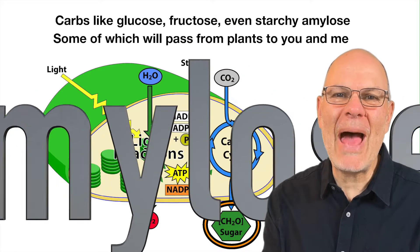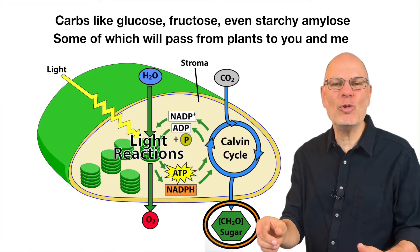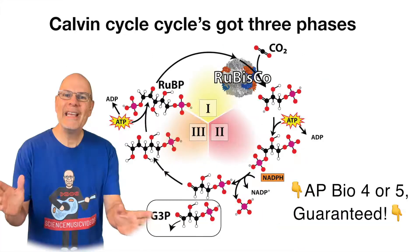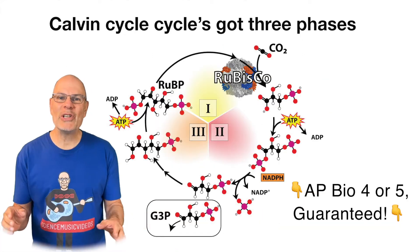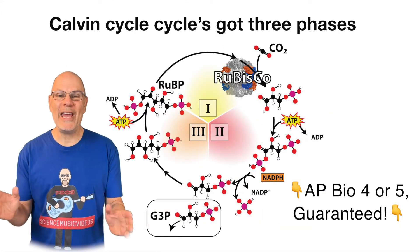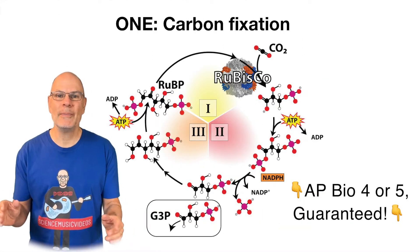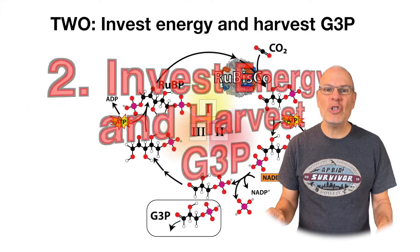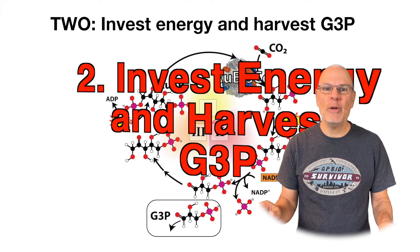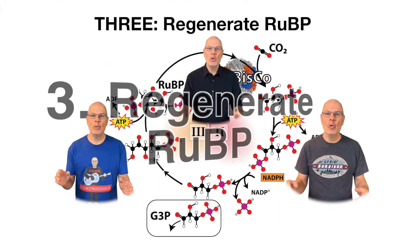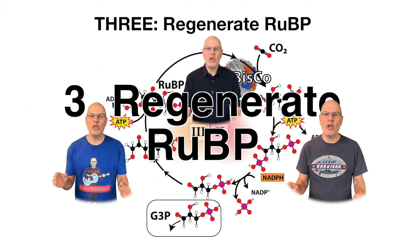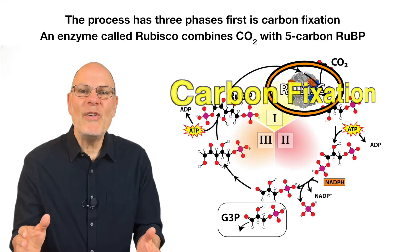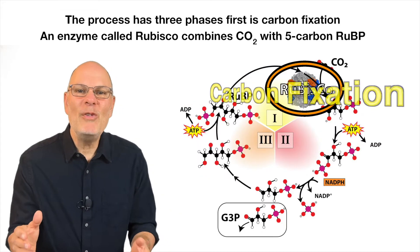Carbs like glucose, fructose, and even starchy amylose, some of which will pass from plants to you and me. Calvin Cycle's got three phases. One, carbon fixation. Two, invest energy, impoverish G3P. Three, regenerate R-U-B-P. The process has three phases: first, carbon fixation.